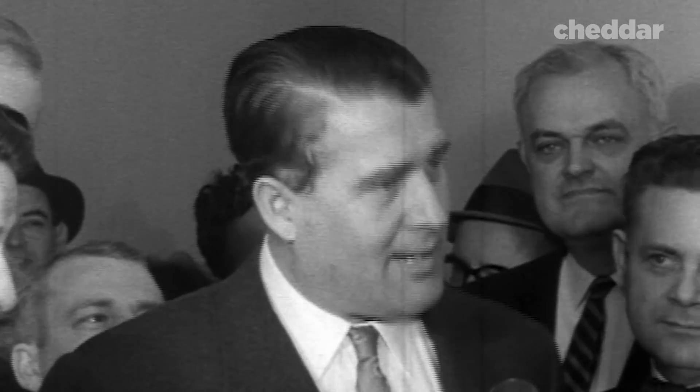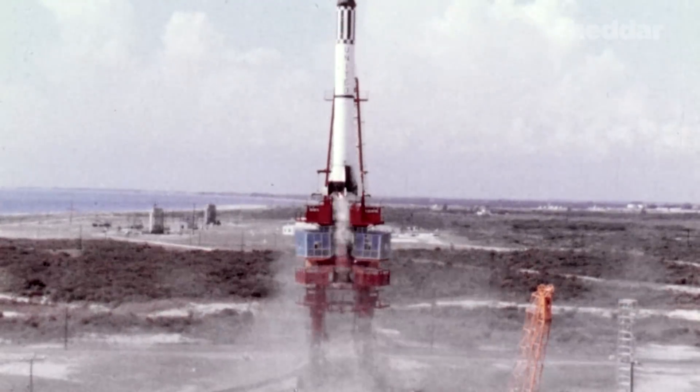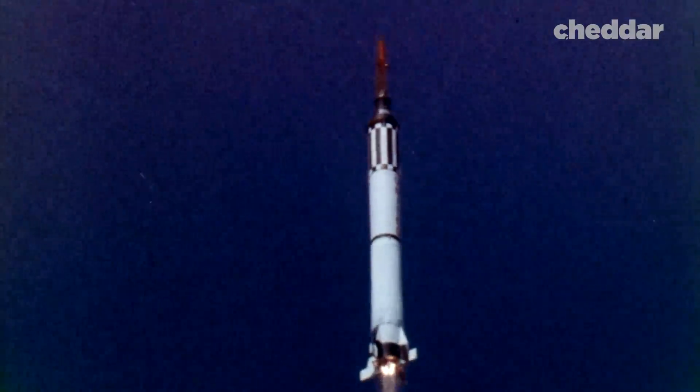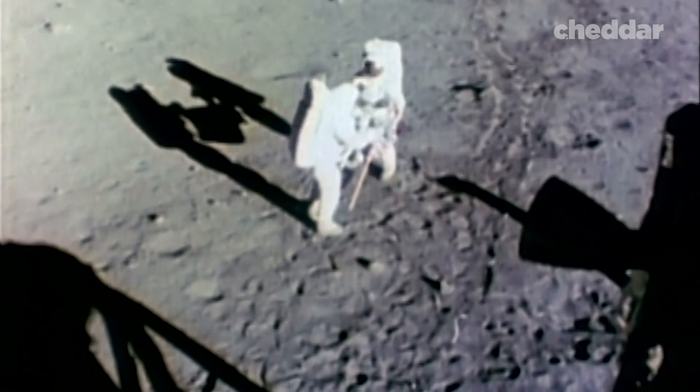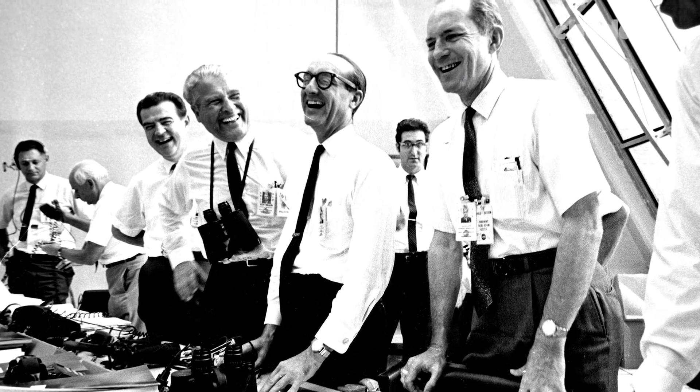Putting von Braun to work under this peaceful space paradigm also made him an American hero. He and his teams built the rockets that put the Mercury program's first Americans into space, and then the Apollo program's first men on the moon. That's one small step for man, one giant leap for mankind.